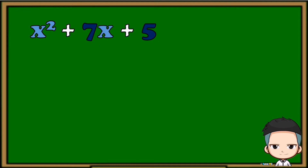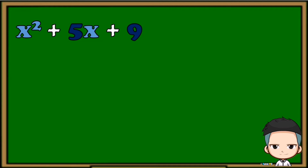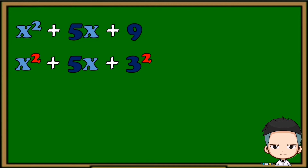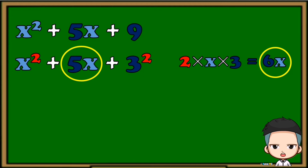Let's try another one: x squared plus 5x plus 9. Are the first term and last term both perfect squares? Yes — x squared and 9 are both perfect squares. Now to check the second condition, we put them in squared form: x squared and 3 squared. Multiplying the constant value times the bases, we can see the result is not equivalent to the second term of the original given, meaning x squared plus 5x plus 9 is not a perfect square trinomial.